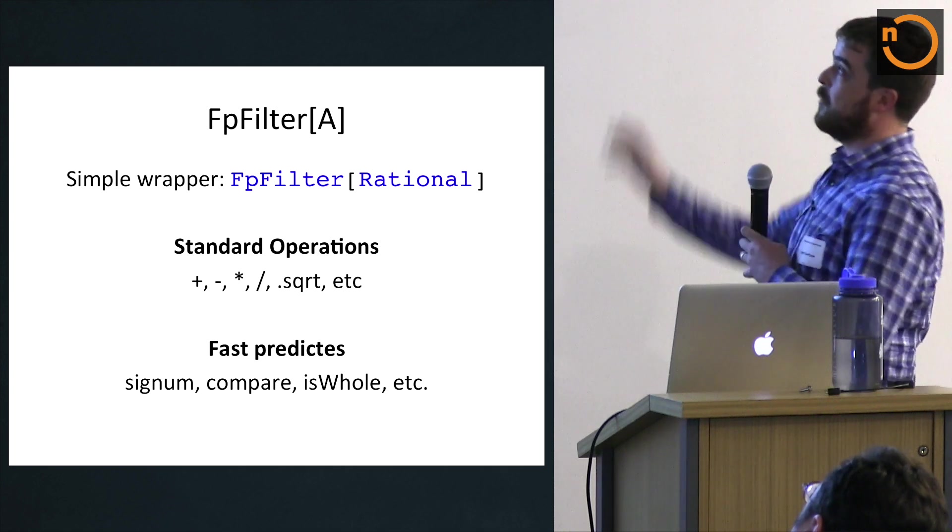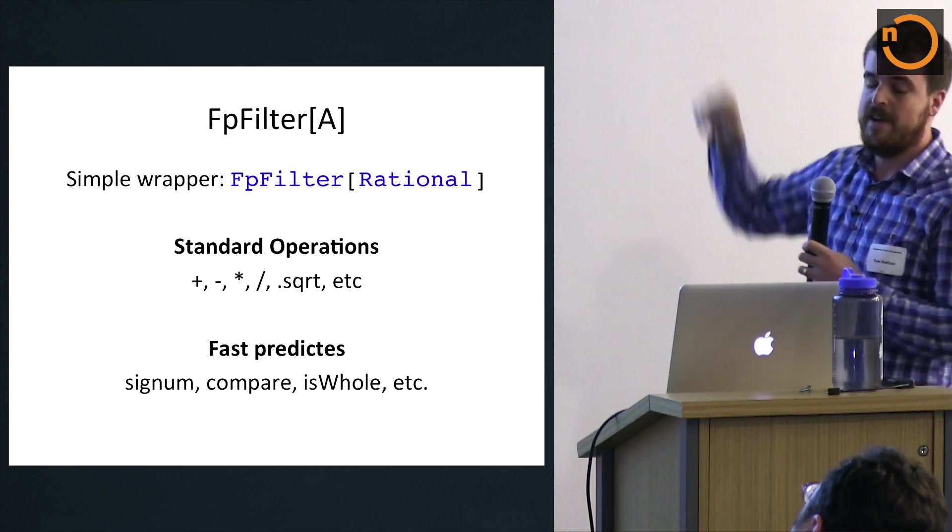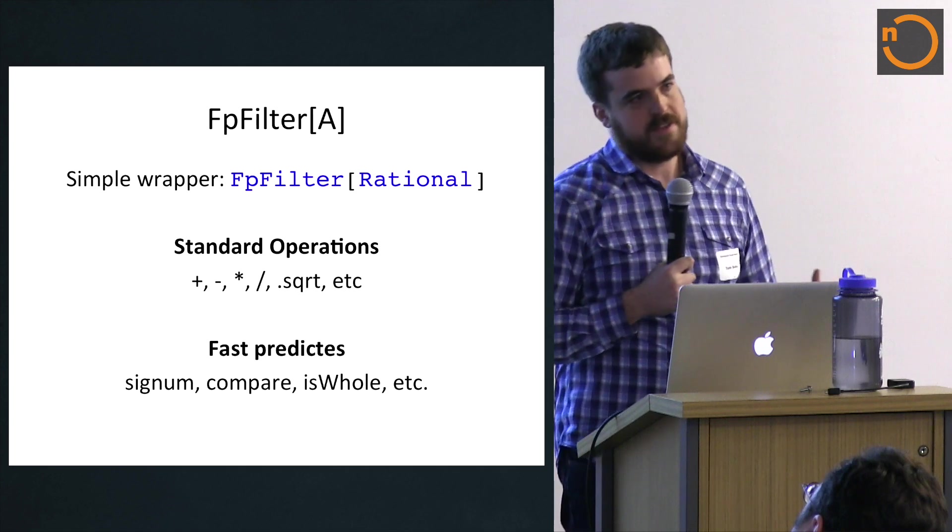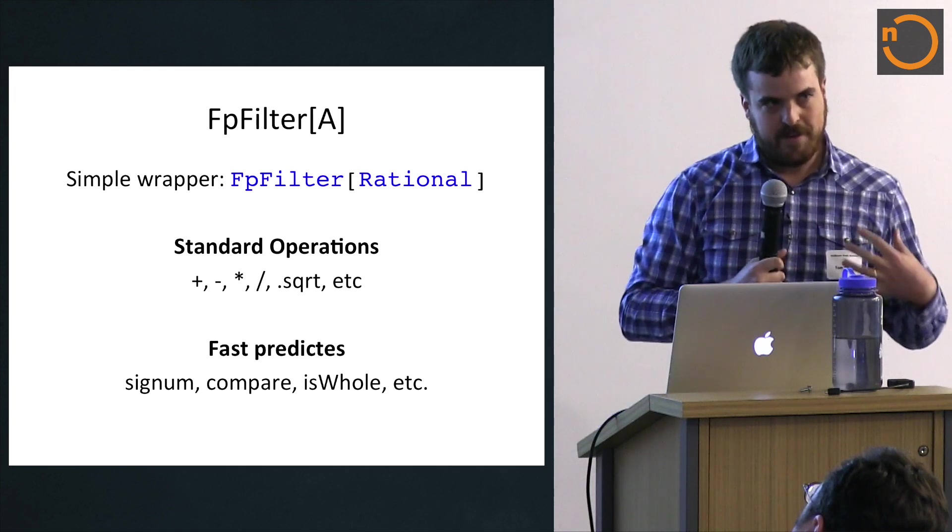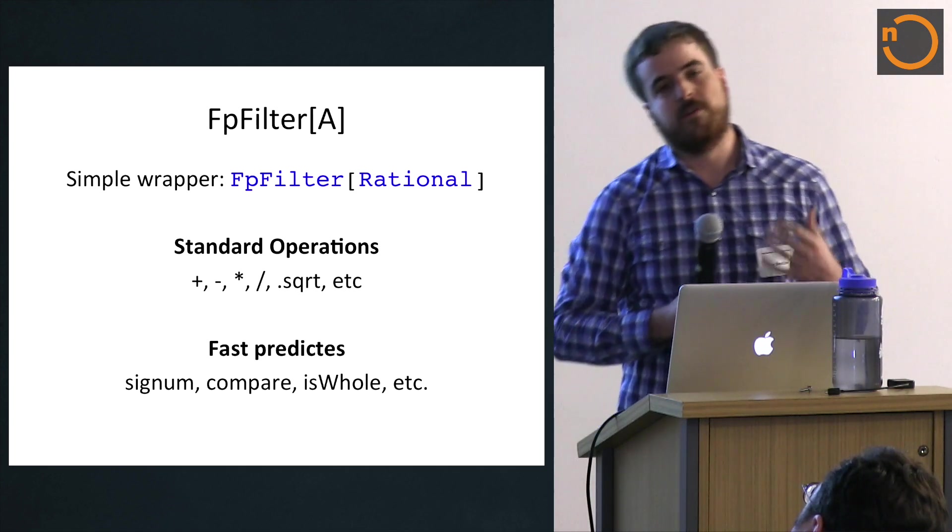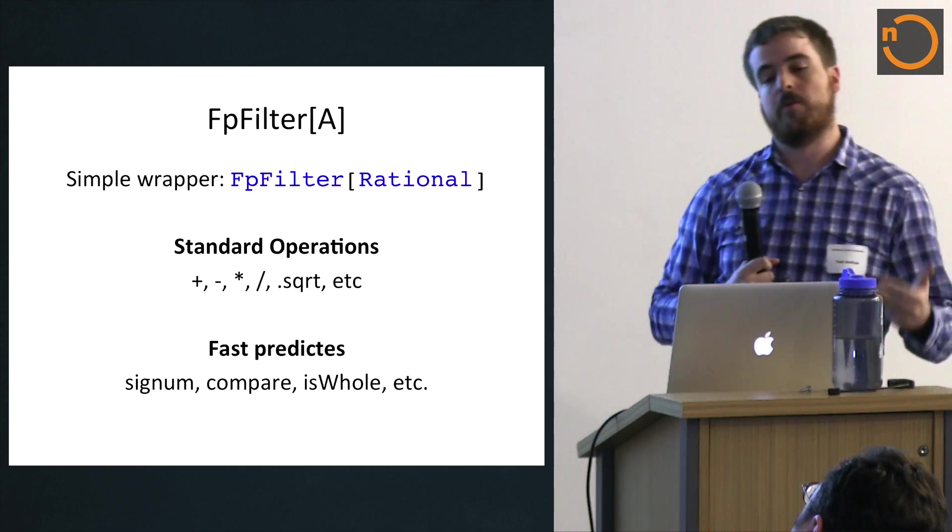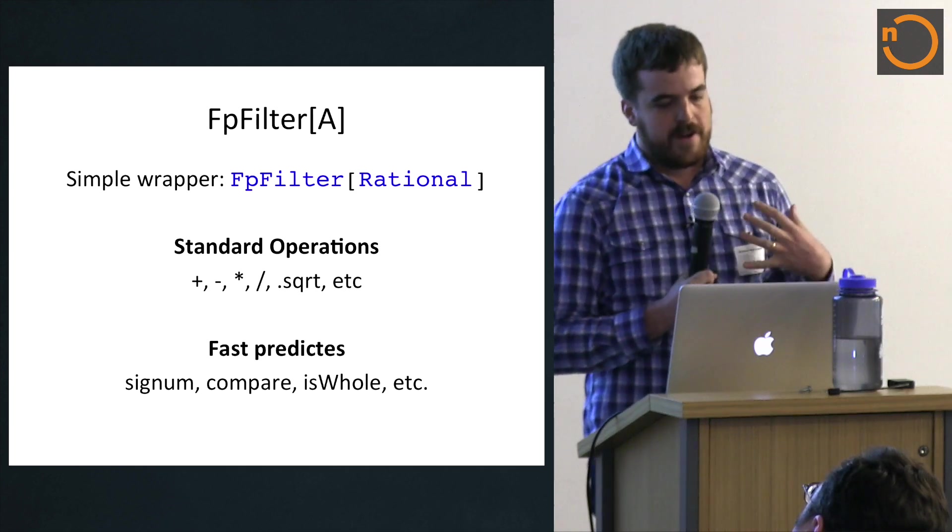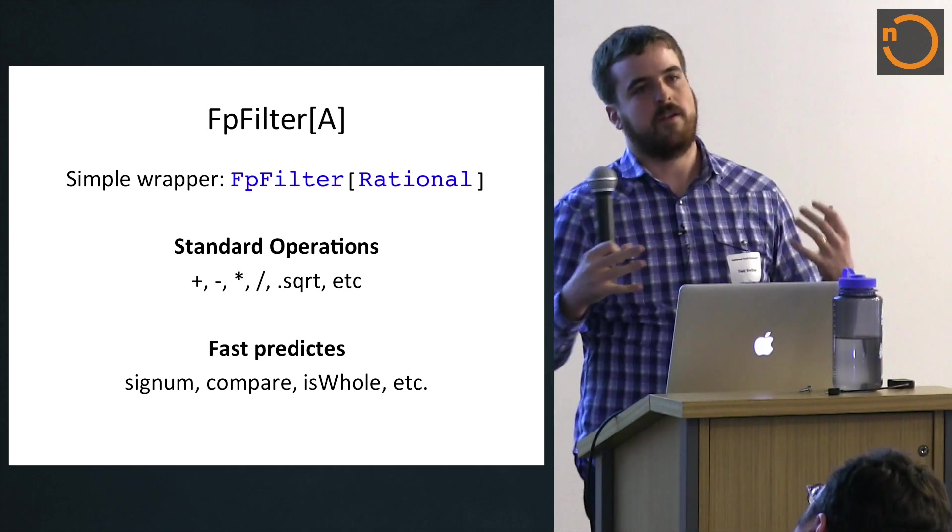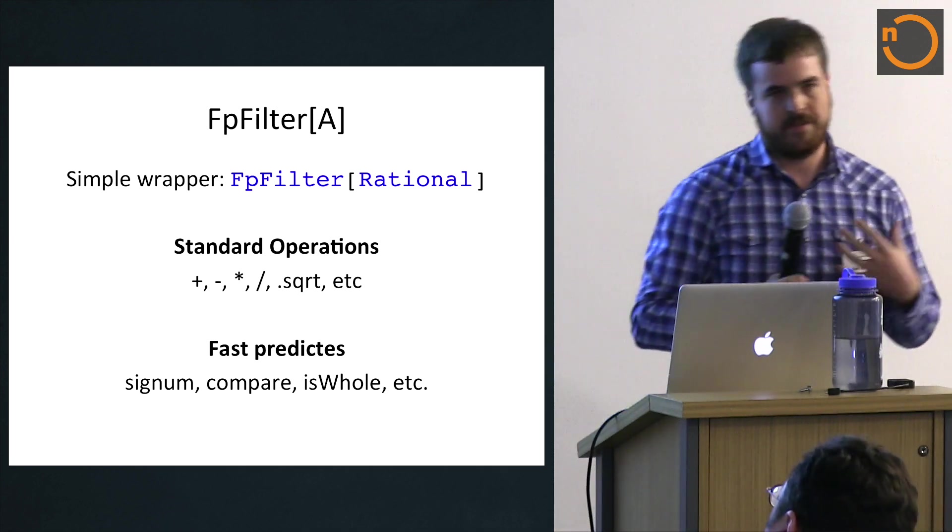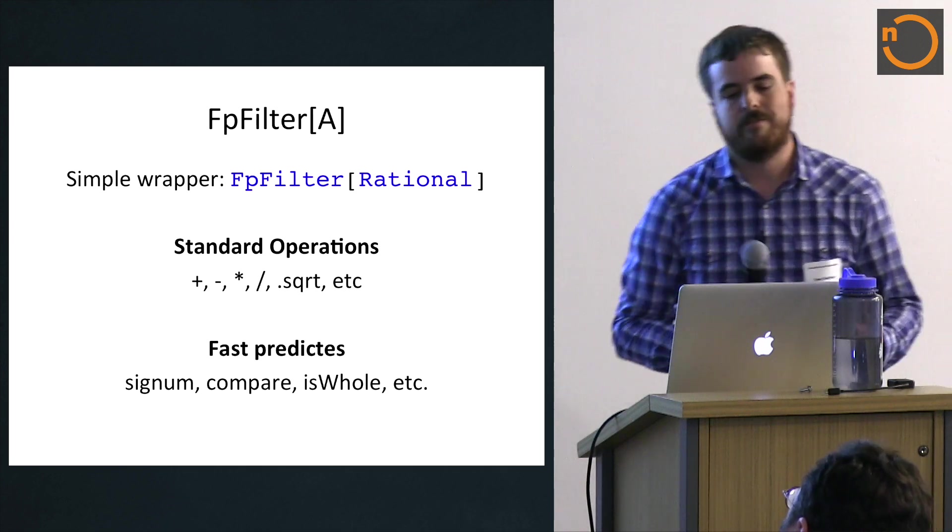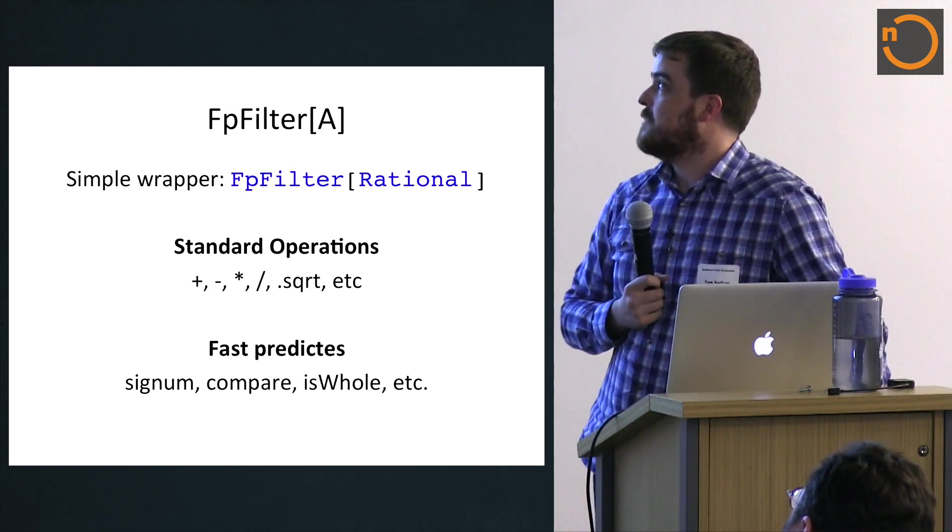And so our floating point filter, it really is pretty simple, just a wrapper. You can see here, we parameterize it on the type we're using. You generally want to parameterize it on an exact type because that's its whole point in life. So exact types are big int, rational, Spire has one algebraic, and there's also real. And it provides a set of standard operators that it knows how to compute the error bounds for. So these are things like you'd expect like addition, multiplication, division, but also things like square roots and nth roots.